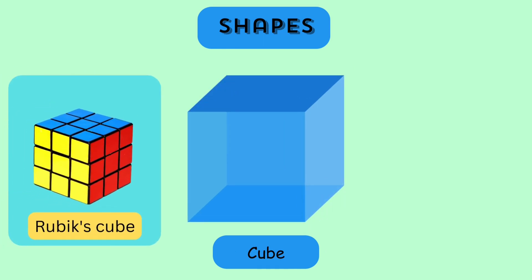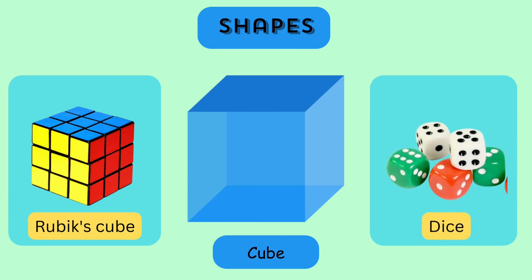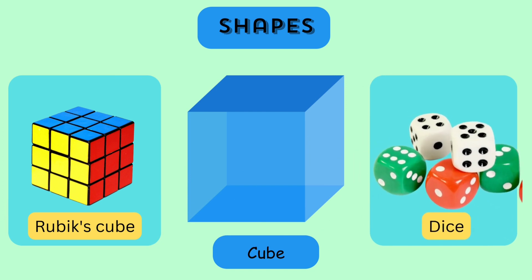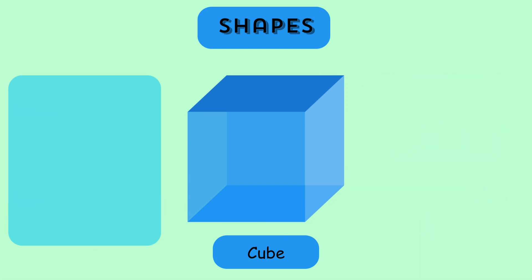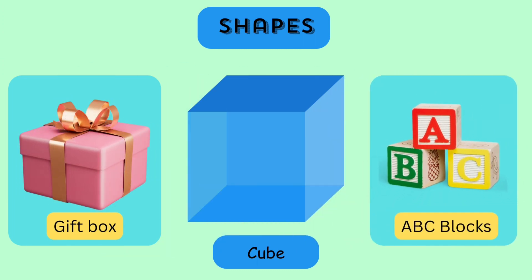Rubik's Cube. A dice. We can spot cube shapes all around us. It can be a gift box. And maybe alphabet blocks.